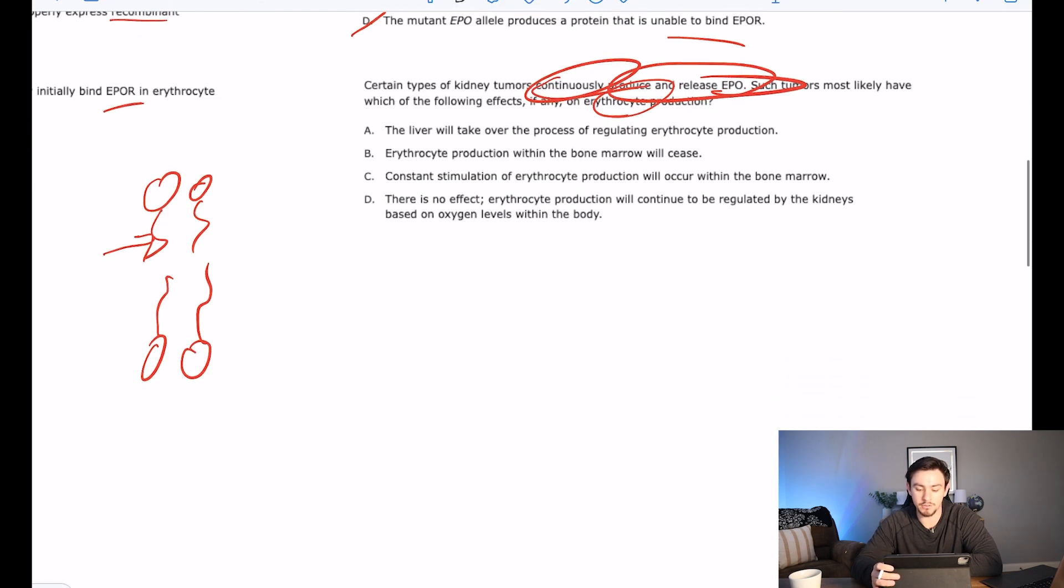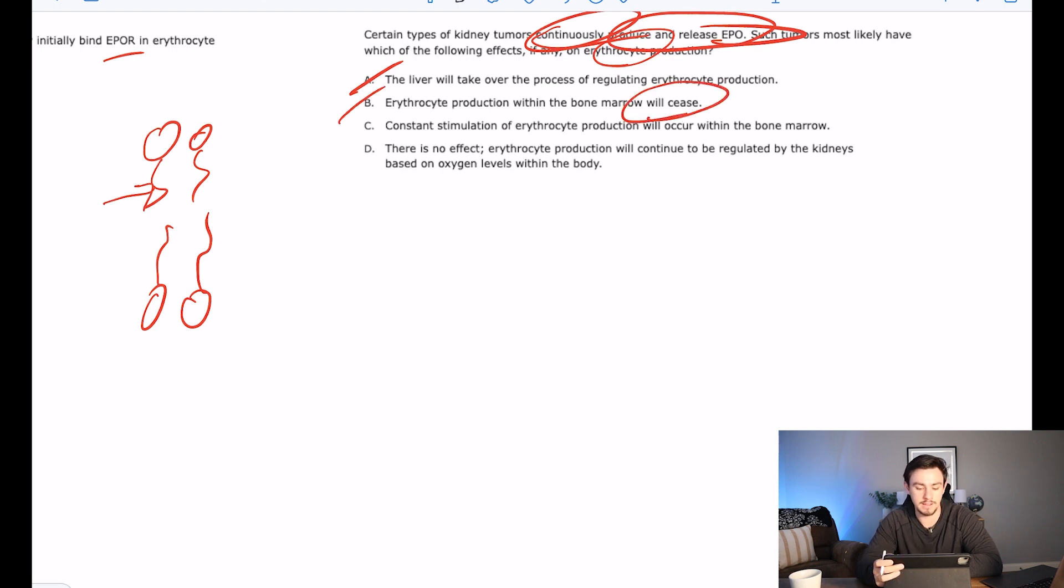A, the liver will take over the process of regulating erythrocyte production. That's not how organs work. They don't just like, you can take the day off kidneys, I got you. Like that's not how it works. So maybe not A. B says erythrocyte production within the bone marrow will cease. Well, no, it's saying like, you know, work harder, keep flexing. Maybe not B.